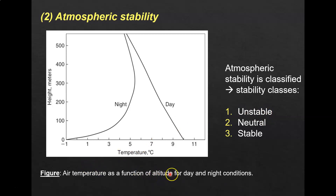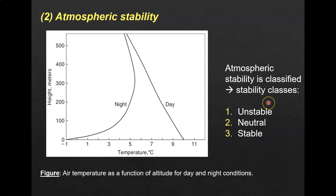You can look at air temperature as a function of altitude for both day and night conditions. Based on the temperature and height of the release, you can determine the atmospheric stability — whether it is unstable, neutral, or stable. These stability classes determine what type of dispersion coefficients you will use.